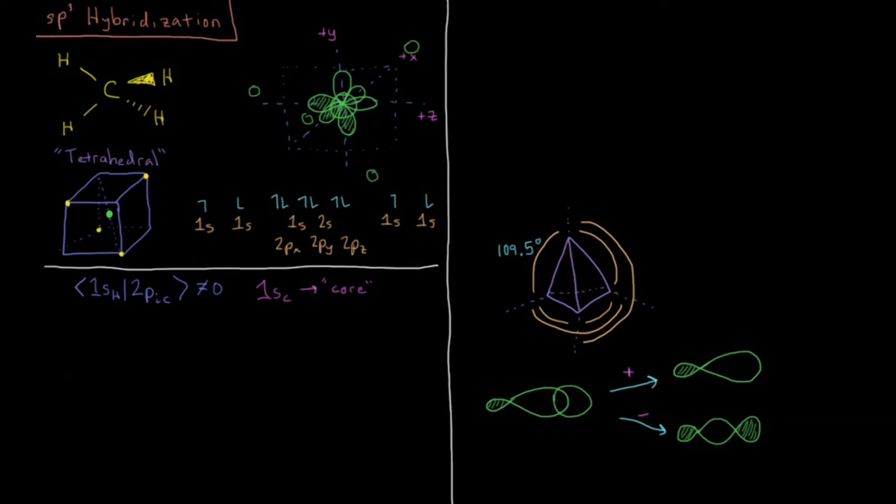So let's write out what our orbitals are going to be. So we have psi sp3 1, and that's going to be 1 through 4 that we're going to have, sp3 2, sp3 3, and sp3 number 4.